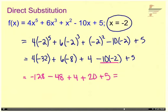And then all we have to do is go through and add all these together. So we take our negative 128 minus 48, plus 4, plus 20, plus 5, and we get negative 147.